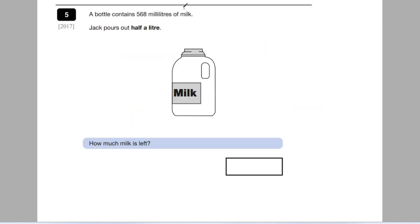Next question. This time we've got a carton of milk. A bottle contains 568 millilitres of milk. Jack pours out half a litre. How much milk is left? So he's starting off with 568. Now remember, I told you, you need to know that 1000 millilitres is equal to one litre. Therefore, 500 millilitres is equal to half of that, half a litre.